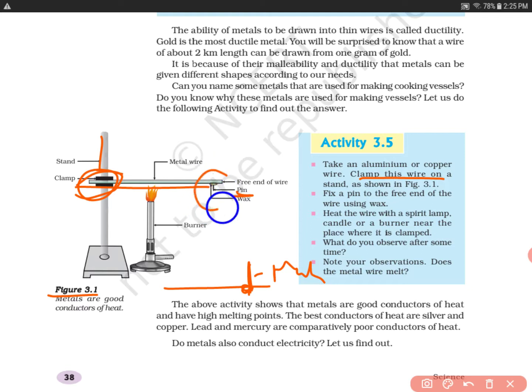Now we need to heat the wire with a spirit lamp, candle, or a burner near the place where it is clamped. Where you have clamped this side, we will heat up the end of the wire. What do you observe after some time? Note your observation. Does the metal wire melt?